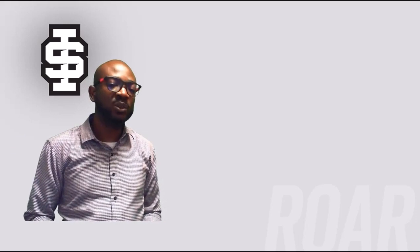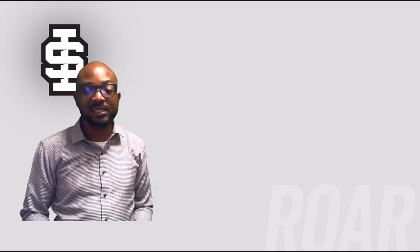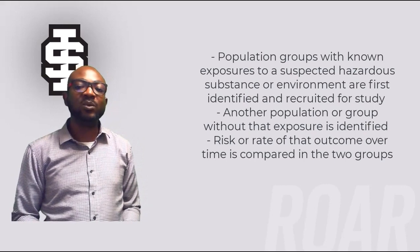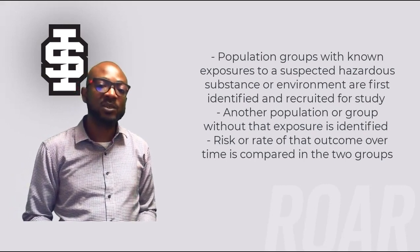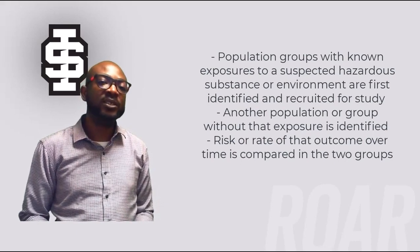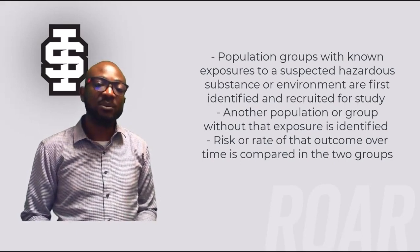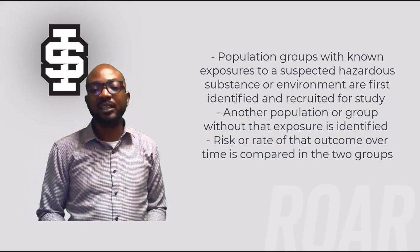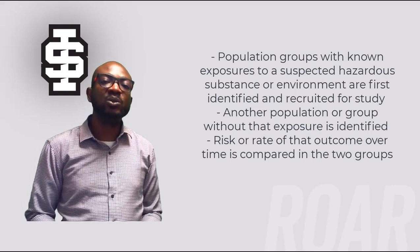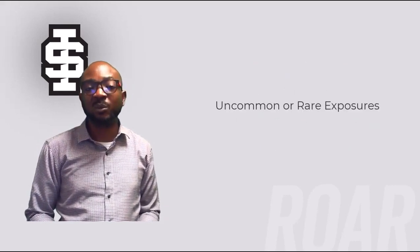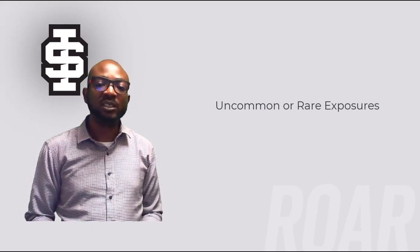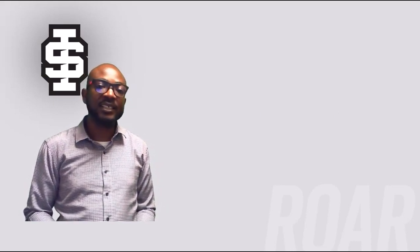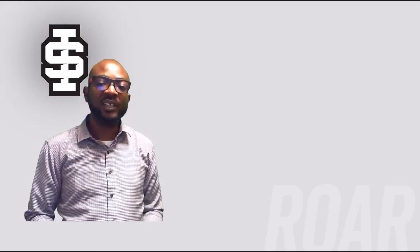Investigators may select a cohort specifically to study certain uncommon or rare exposures. In some cohort studies, population groups with known exposures to a suspected hazardous substance or environment are first identified and recruited, then another population without that exposure is identified, and the risk or rate of that outcome over time is compared in the two groups. Cohort studies can be particularly useful for studying rare exposures because it is usually possible to identify and assemble groups of persons who have that uncommon exposure.